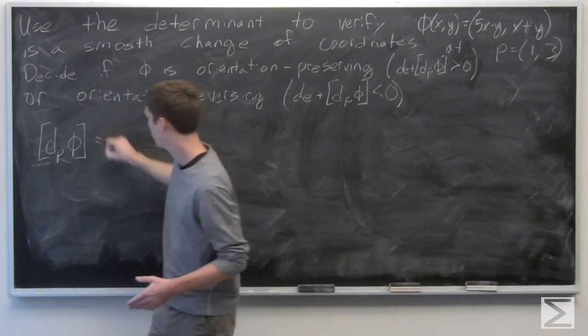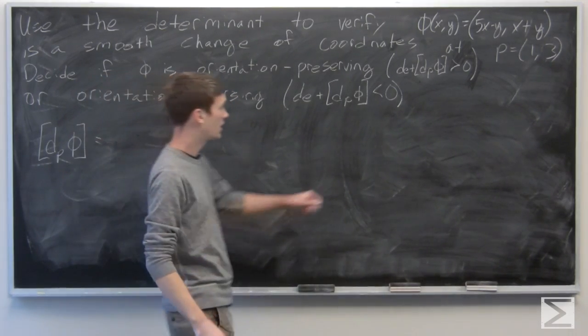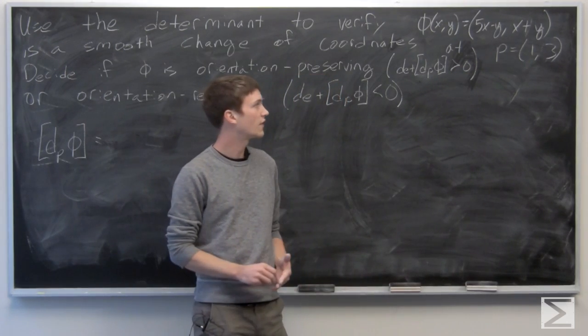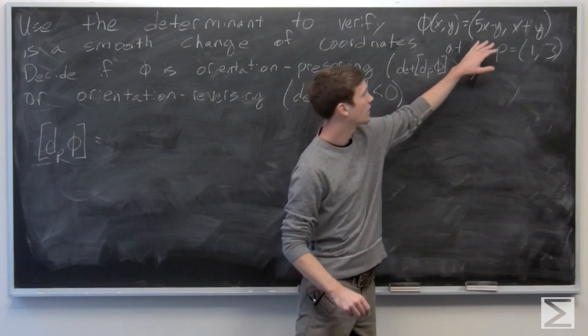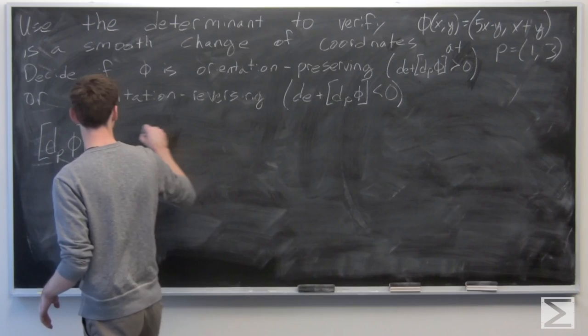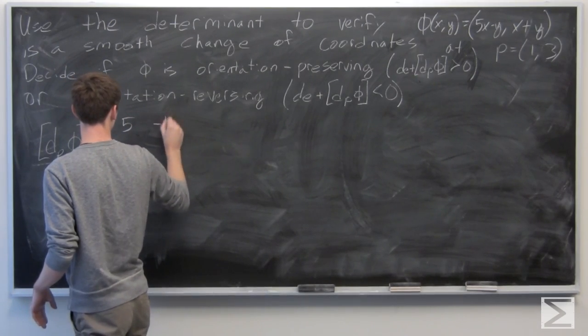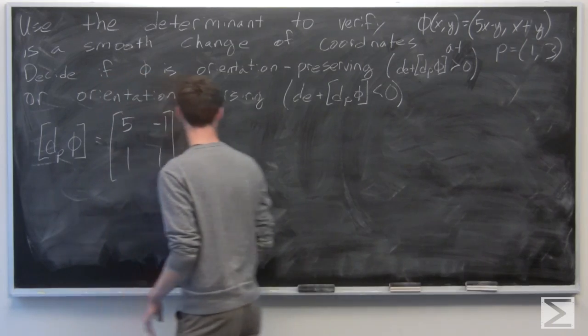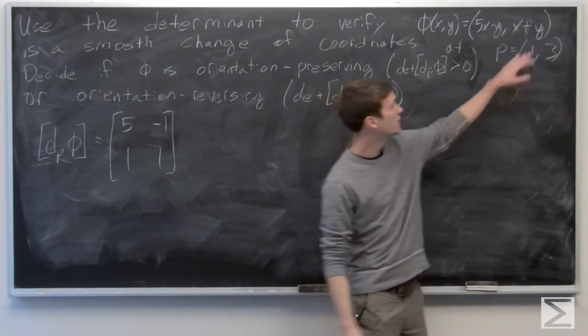We know that the Jacobian matrix has rows that correspond to the gradient vector of each of the components, so the gradient vector of the first component is (5, -1). And the gradient vector of our second component is (1, 1).